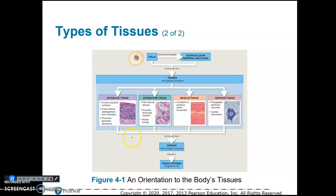Epithelial tissue forms coverings and linings — coverings like skin, the coverings of your organs, your internal organs, and then linings like the inside of blood vessels and the inside lining of your digestive tract. Epithelial tissue also produces glandular secretions like sweat and oil.